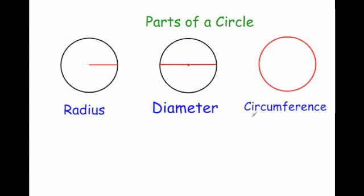The circle has a fancy name for its perimeter and it's called the circumference. The circumference is the distance around the outside of the circle — it's just another name for the circle's perimeter, the distance around the outside.